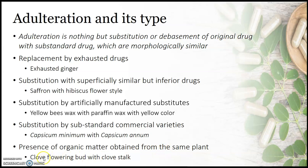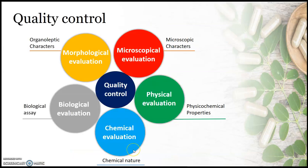The fifth type is presence of organic matter obtained from the same plant. Here, the original drug is adulterated with other parts of the same plant. For example, clove flowering buds look similar to clove stalks, so the intentional addition of clove stalks into clove flowering buds falls under this type of adulteration.